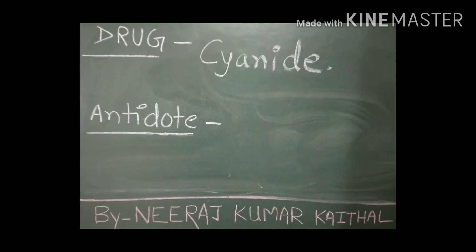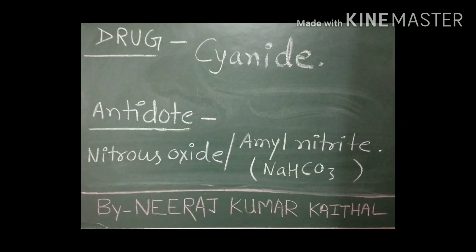Drug name: Cyanide. In case of cyanide poisoning, what do we use as an antidote? Sodium nitrite or Amyl Nitrate and NaHCO3 are used as antidotes in case of cyanide poisoning.